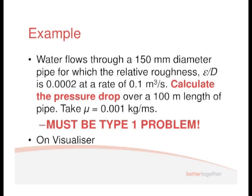Type 1 problem, and we've been given a value for relative roughness, epsilon upon d. We've also got the diameter and we've got a flow rate, so we can go ahead and solve this, and we'll do that on the visualizer.